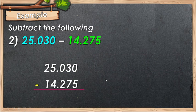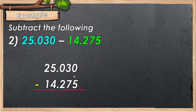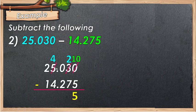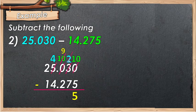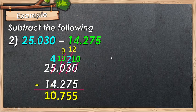Example number 2: 25.30 minus 14.279. Align the decimal in column and align the decimal point vertically. Subtract as whole numbers. 0 minus 5 cannot be, borrow from 3. 3 becomes 2 and 0 becomes 10. 10 minus 5 is 5. 2 minus 7 cannot be, borrow from 0, which borrows from 5. 5 becomes 4, 0 becomes 10, and 2 becomes 12 via borrowing, giving 9. 12 minus 7 is 5. 9 minus 2 is 7. 4 minus 4 is 0. 2 minus 1 is 1. The answer is 10.755.